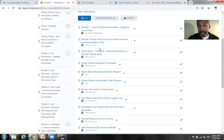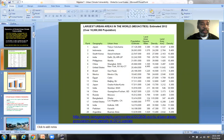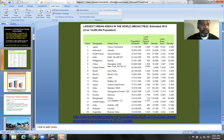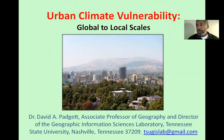Let's get right into it. I'm going to open up the presentation and get it into presentation mode. I want you to think about what is happening globally in terms of climate change and urbanization. This is Urban Climate Vulnerability: Global to Local Scales. We're going to start off looking at this from a global perspective, and then move on to other aspects of this issue.